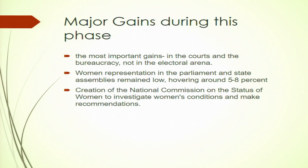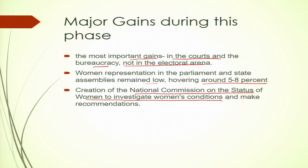Despite these limitations, one of the most important gains was that in the courts and bureaucracy, the voices of women got heard and their representation was ensured. Some radical judgments came during the 70s and 80s which influenced gender politics in India for decades to come. The limitation was that the influence was not in the electoral arena — women's representation in the parliament and state assemblies remained low, hovering around 5 to 8 percent for very long. By the early 90s, the creation of a national commission on the status of women to investigate women's conditions and make recommendations took place — a major gain in terms of gender politics in India in the 1980s.